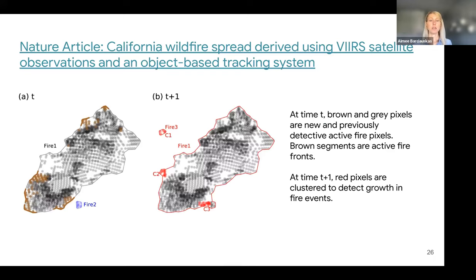If you want to learn more about this algorithm, there is a Nature article describing it in detail. It's a novel object-based system for tracking the progression of individual fires using VIIRS active fire detections. At time T, you can see active FIRE pixels used to identify the FIRE perimeter where the fire is growing. Then at time T+1, new active FIRE pixels have been identified in red, which helps determine how the fire is spreading, as well as how it might spread to a new fire.